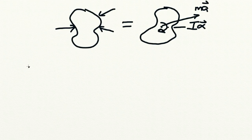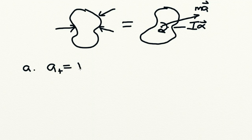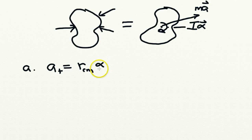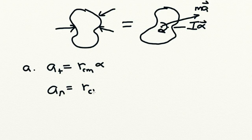For non-centroidal rotation, we had a few equations to remember. First, we could calculate the tangential and normal components of the acceleration. The tangential component is R_cm times alpha, where alpha is the angular acceleration. The normal component is R_cm times omega squared, where omega is the angular velocity.